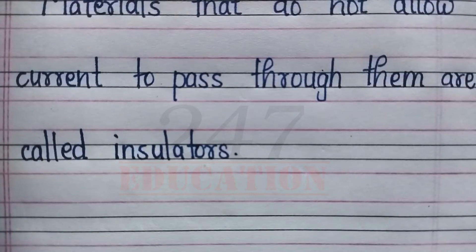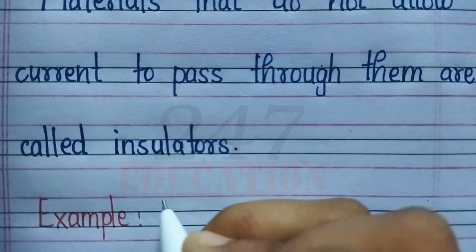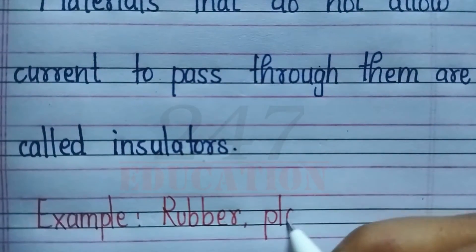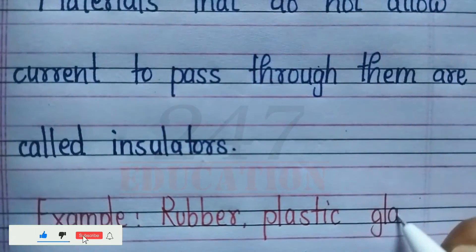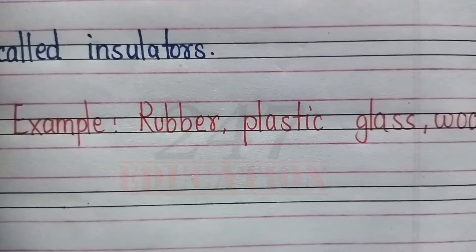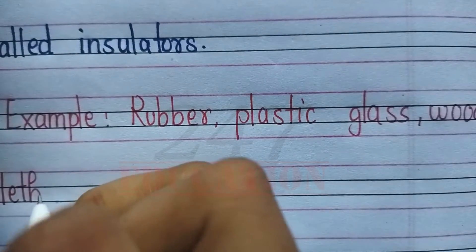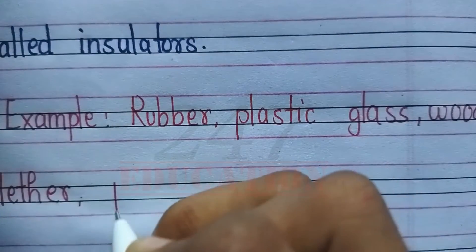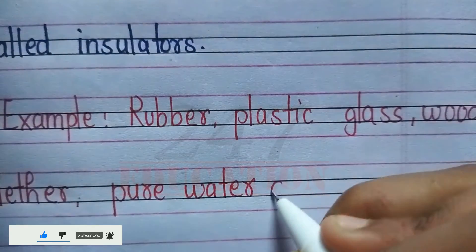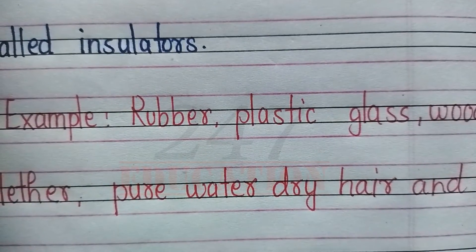For example: rubber, plastic, glass, wood, leather, pure water, dry hair, and most gases are insulators.